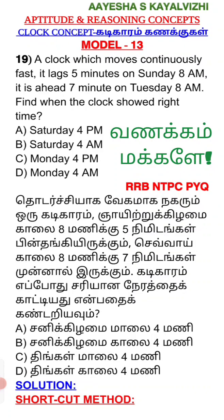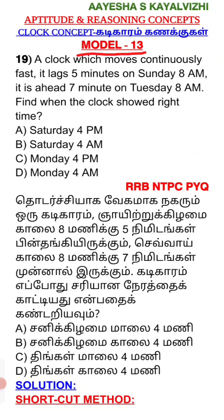This is question 19. There is a clock which moves continuously fast. It takes 5 minutes on Sunday 8am, and it is again 7 minutes on Tuesday 8am. Find when the clocks are at the right time.